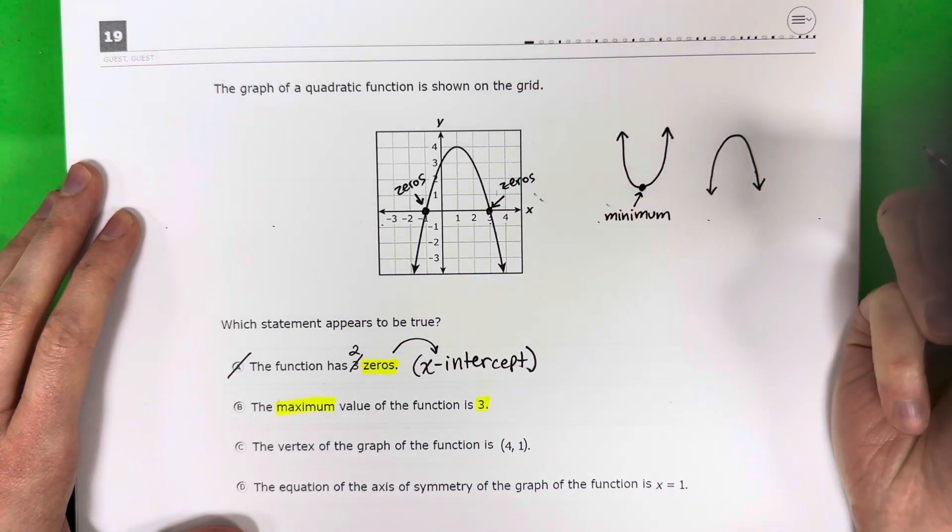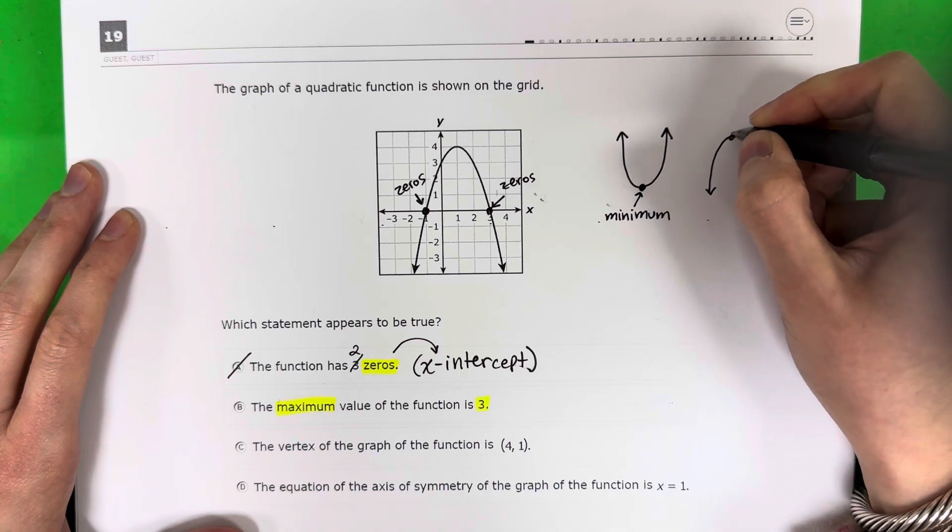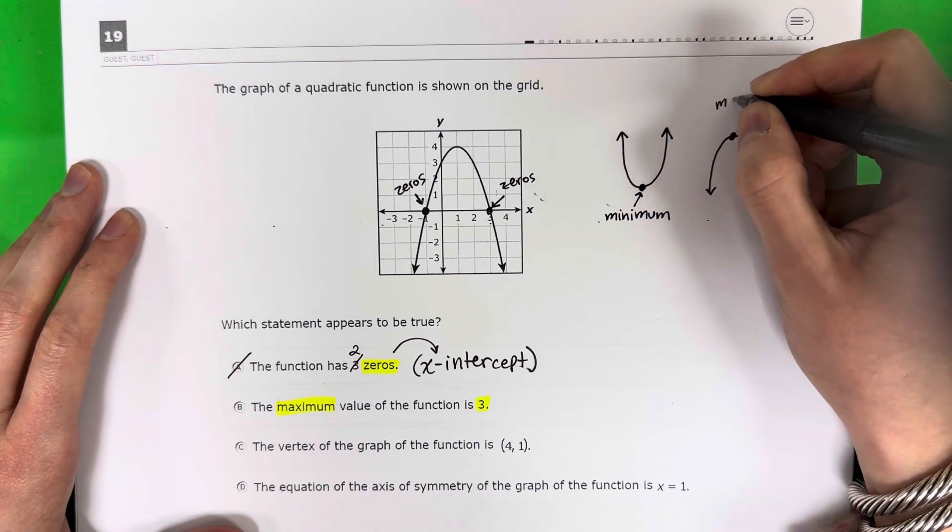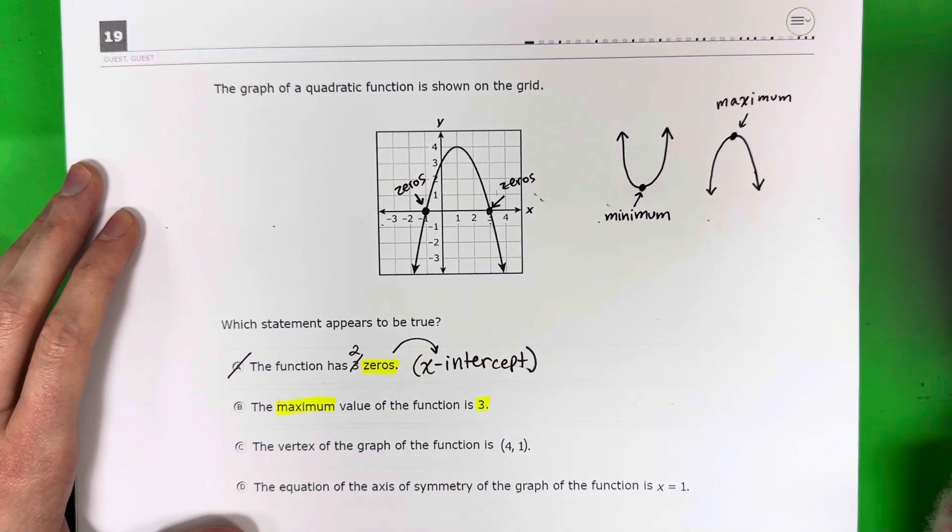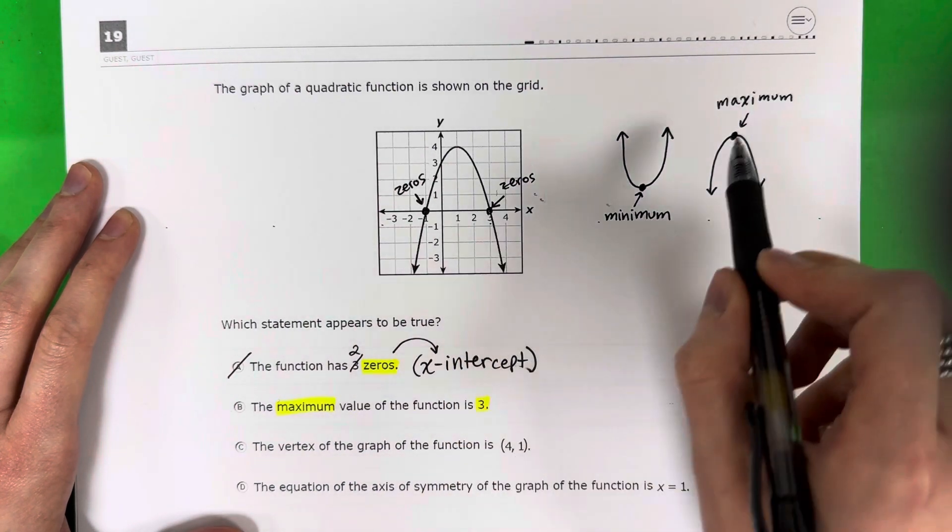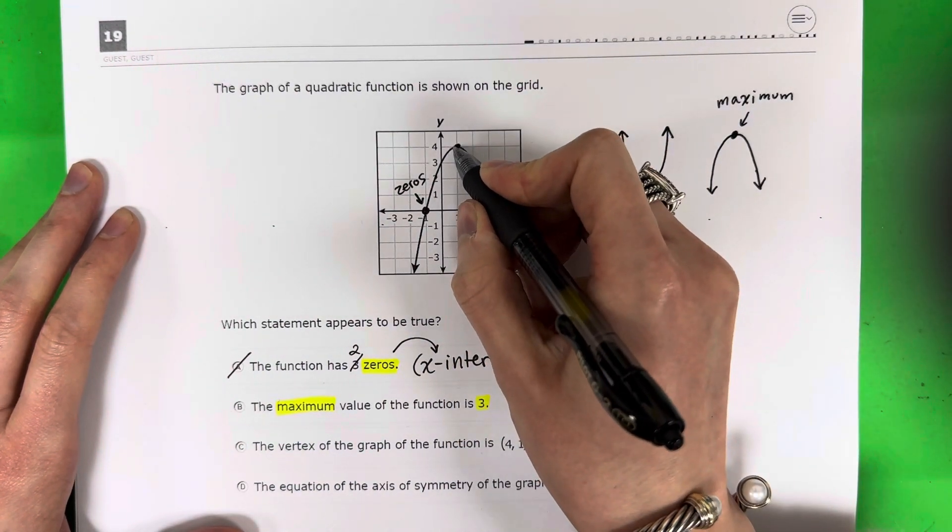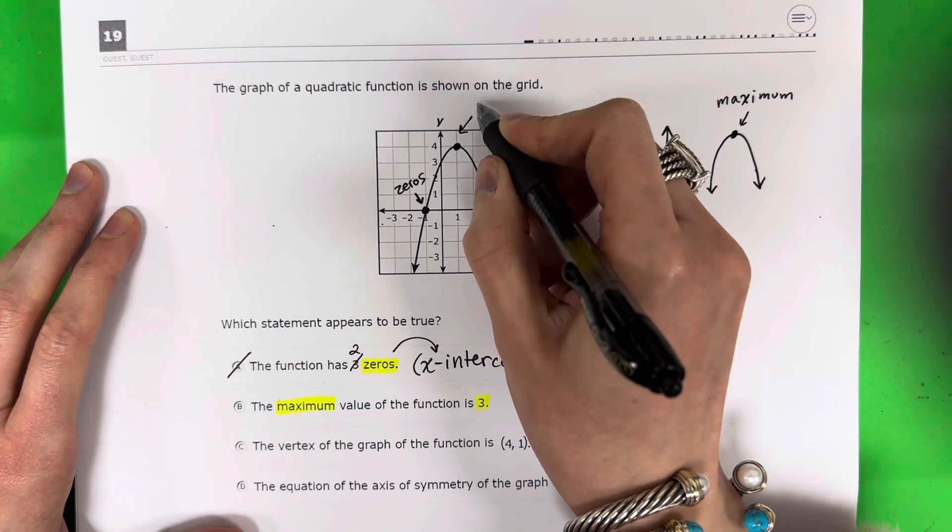And this right here would be a minimum because this point is down, right? That means it's small. And this point right here is the maximum because it's up. That means it's big, right? So this one has a maximum. That would be the center right here. Okay, this is the maximum.